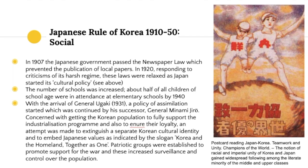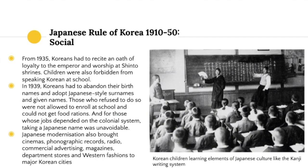Under assimilation, Koreans' distinguishing cultural identity began to be extinguished. The Korean language was banned; Japanese religion was introduced. Posters proclaimed 'Japan and Korea — teamwork, community, champions of the world.' Slogans such as 'Korea and the homeland together as one' circulated widely. Patriotic groups were established to promote support for war, increasing surveillance and control over the population.